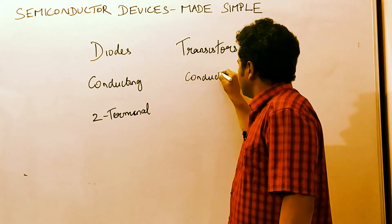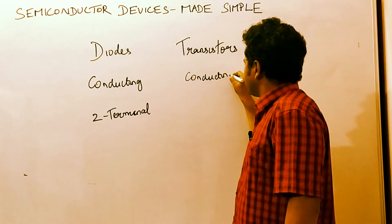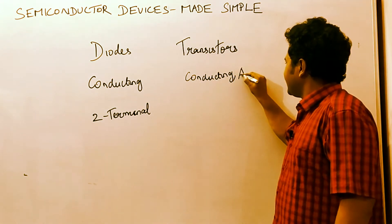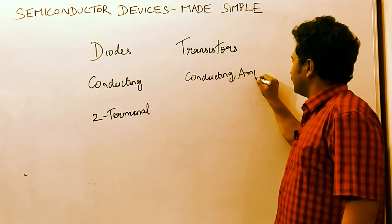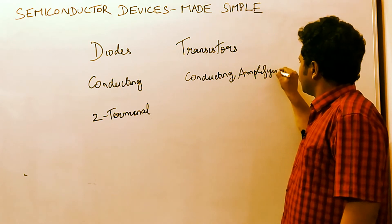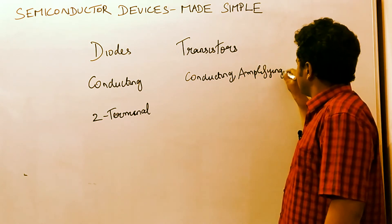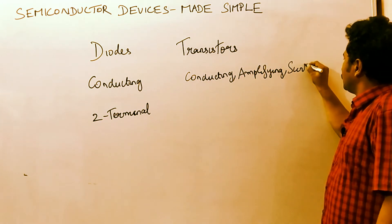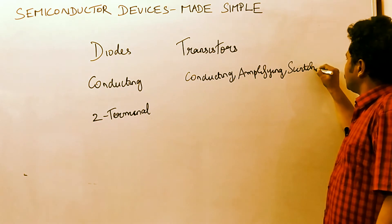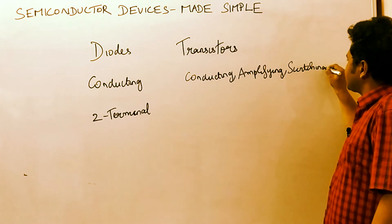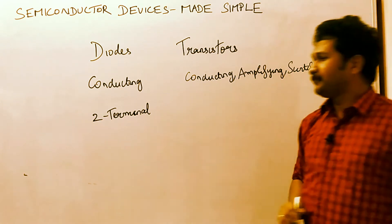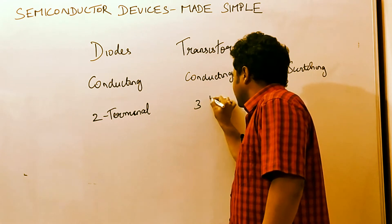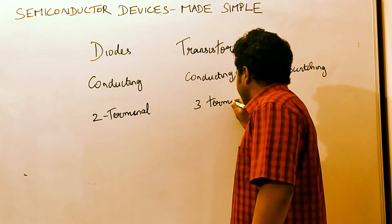A transistor is a conducting device, an amplifying device, and a switching device — transistor acts as a switch. More importantly, it is a three-terminal device.